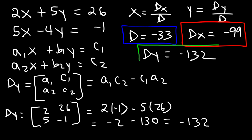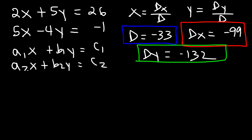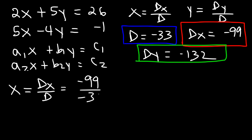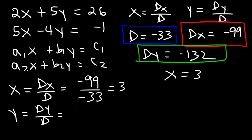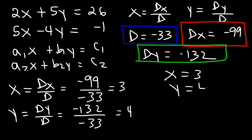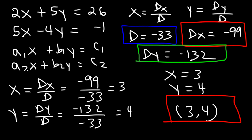Now that we have d, dx, and dy, we have everything needed to calculate x and y. X is dx divided by d, which is negative 99 divided by negative 33, and that equals 3. Y is dy over d, which is negative 132 divided by negative 33, and that equals 4. So the solution is (3, 4). Now you know how to solve a system of linear equations with two variables using Cramer's rule.